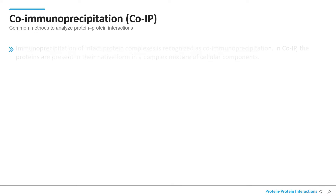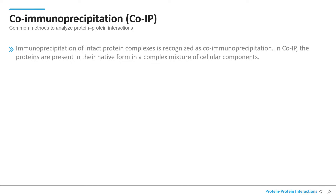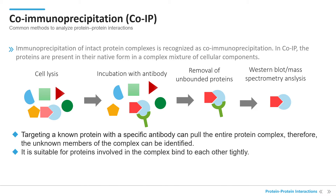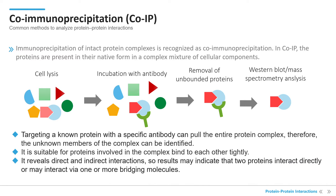Immunoprecipitation of intact protein complexes is recognized as co-immunoprecipitation. In co-immunoprecipitation, the proteins are present in their native form in a complex mixture of cellular components. Targeting a known protein with a specific antibody can pull the entire protein complex; therefore, the unknown members of the complex can be identified. It is suitable for proteins involved in a complex that bind to each other tightly. Immunoprecipitation experiments reveal direct and indirect interactions, so results may indicate that two proteins interact directly or may interact via one or more bridging molecules.